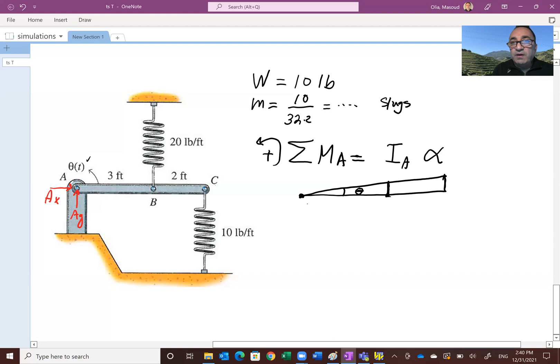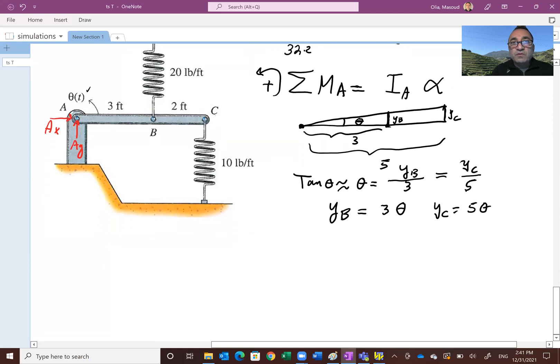This is three feet, and this is five feet. For a small angle, tangent of the angle is the same as angle in radians, and tangent is opposite divided by adjacent. If I call this Y_B and Y_C, then Y_B divided by three feet is the same as Y_C divided by five feet. So Y_B, how much deformation we get in that spring, is three theta. Similarly, Y_C would be five times theta.